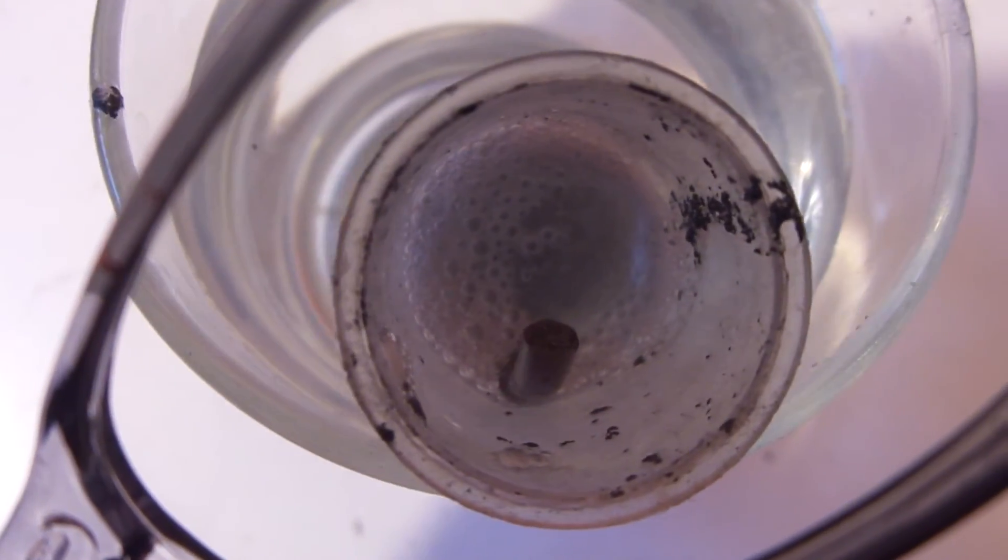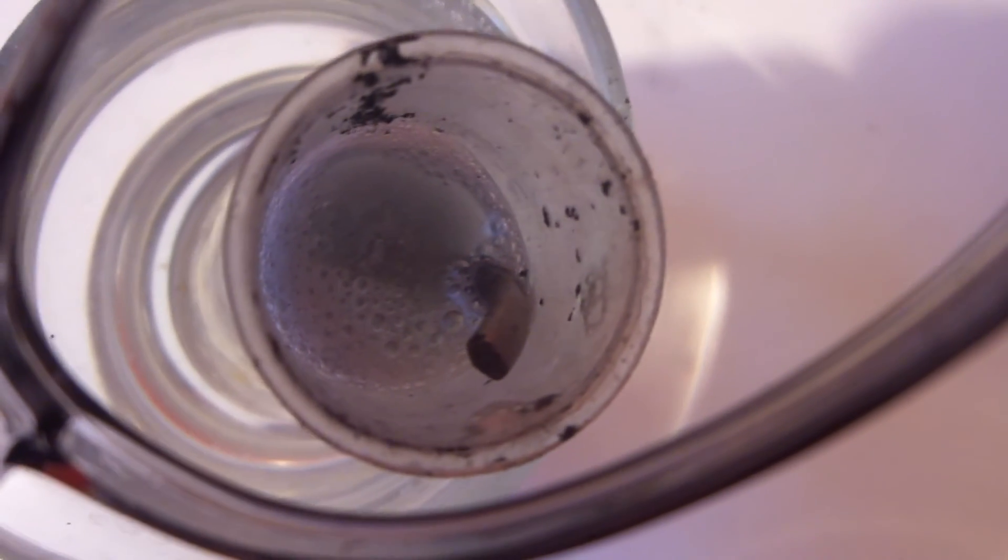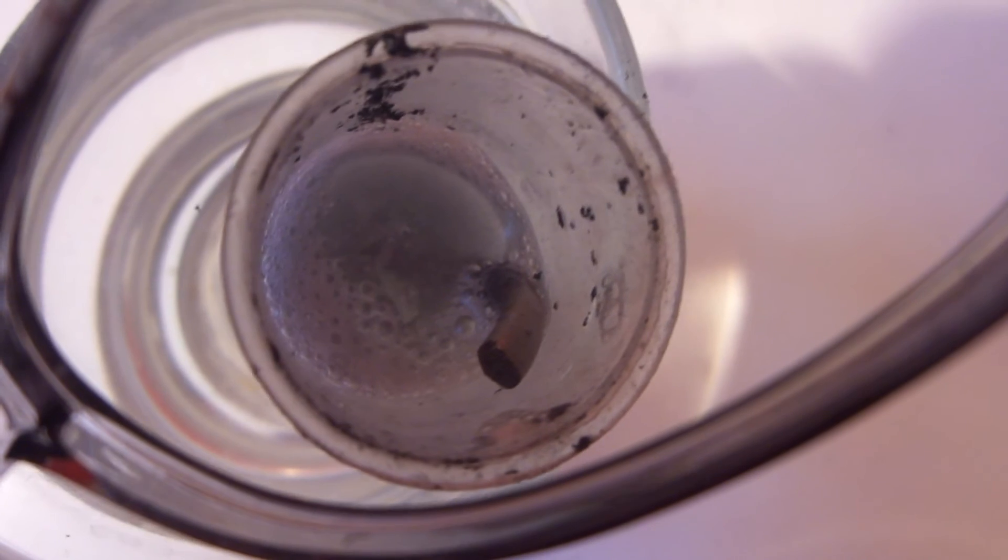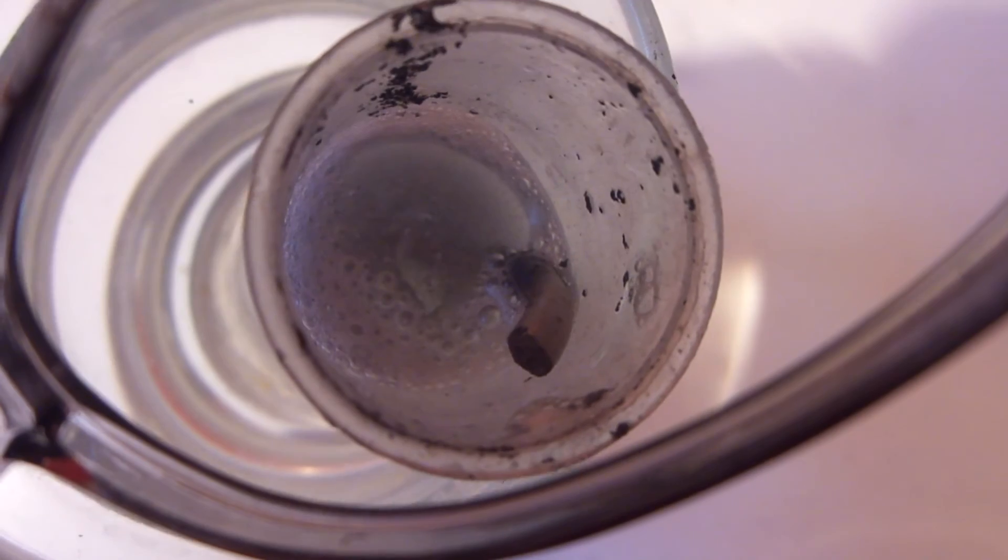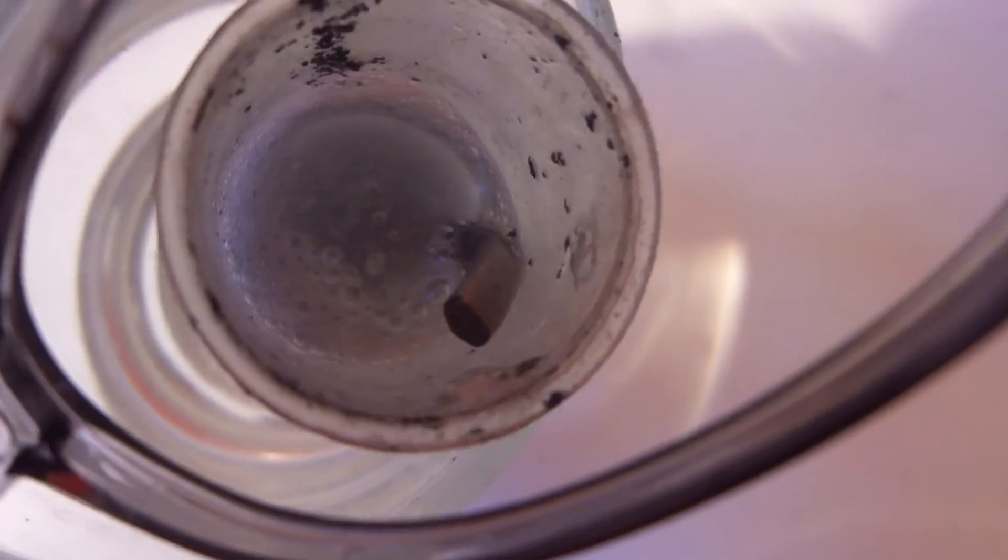Also, ich habe jetzt den zamak rod nochmal reingemacht, also ein Dura-Fix rod. Aber da passiert jetzt nicht viel. Der Dura-Fix rod braucht wohl doch ein bisschen Elektrolyse, damit halt da noch mehr passiert. Weil ich brauche halt unbedingt dieses schwarze Coating, was halt nicht leitfähig ist. I just need this black coating on the zamak rod for the isolation layer.